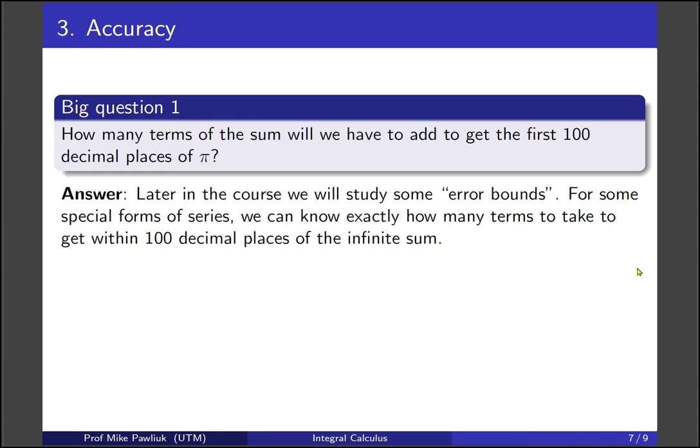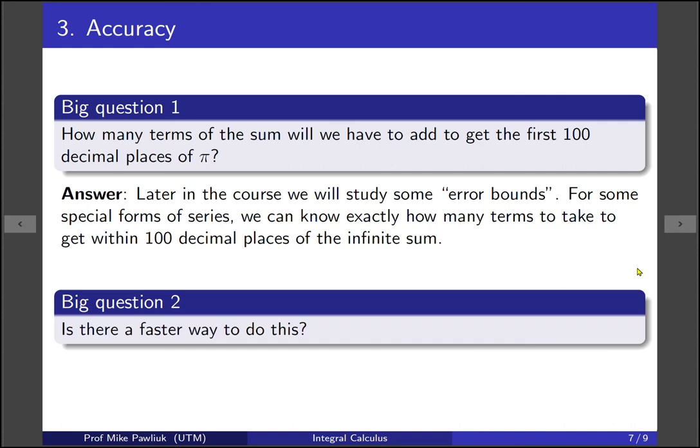So for some special forms of series, not every series, but some of them, we'll know exactly how many terms to take to get to within, say, 100 decimal places of the infinite sum. So be on the lookout for those special series that allow us to have error bounds. A second question that may have come up while thinking about this is, is there a faster way to get the decimals of pi? Because it seems like even taking a thousand terms kind of sucks, and that's not something we can do by hand. So is there a series or another method that converges even faster to pi? This is a great question and one that we won't tackle in a first year calculus course.